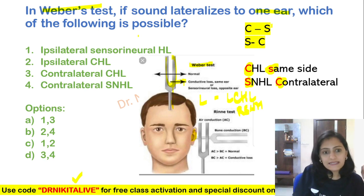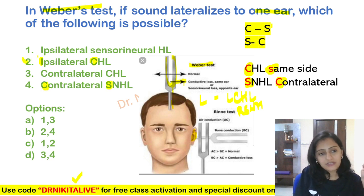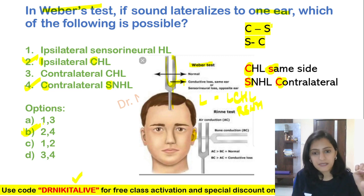So basically, it is conductive same side, ipsilateral same side, or SNHL contralateral. So the correct options are 2 and 4, meaning the correct answer is option B.